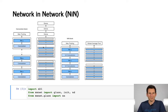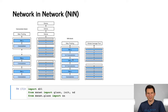Let's have a look at Networks in Networks. For recollection, on the left-hand side we have the VGG network with convolutions and ReLU blocks, and on the right-hand side we have the NIN blocks, which are basically a convolution followed by two one-by-one convolutions with max pooling, and in the end global average pooling.